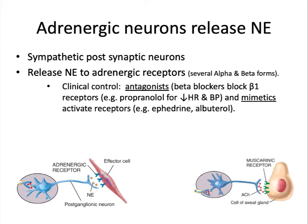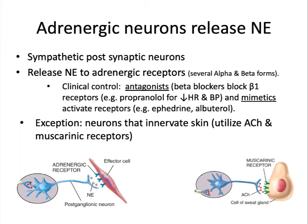An exception to this rule is the neurons that innervate the skin — for example, sweat glands. These sympathetic neurons release acetylcholine, and the gland contains muscarinic receptors. When these receptors bind to acetylcholine, it causes the cell to begin sweat production.